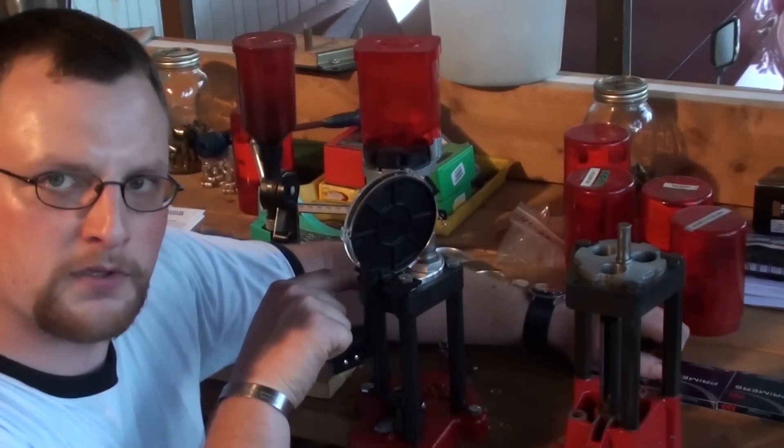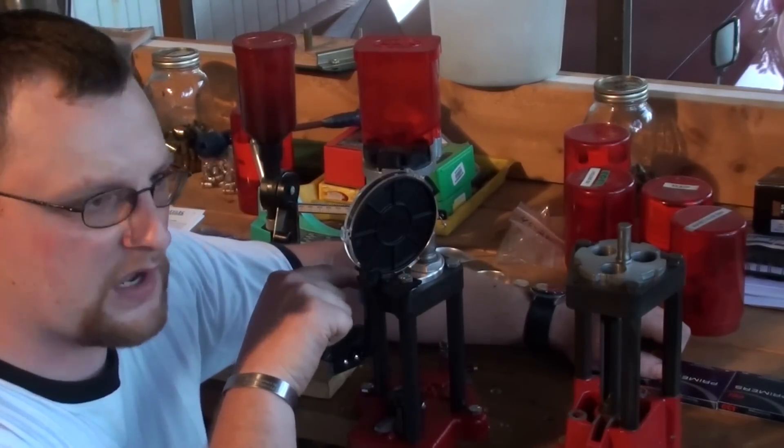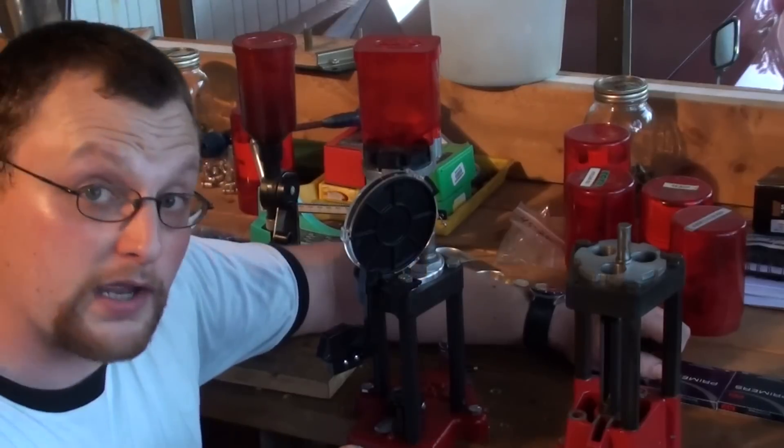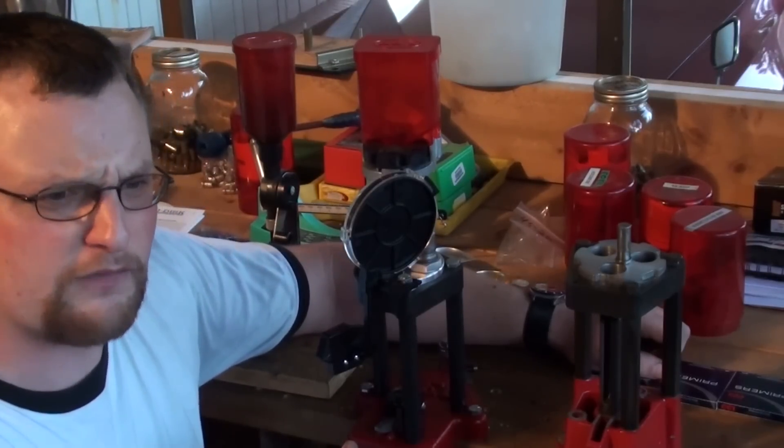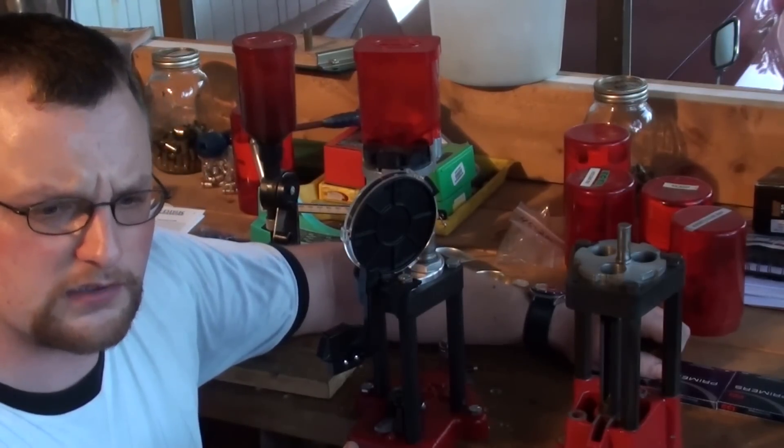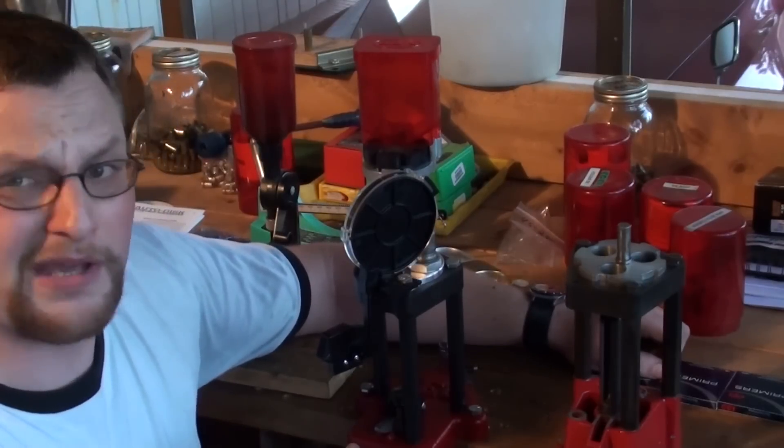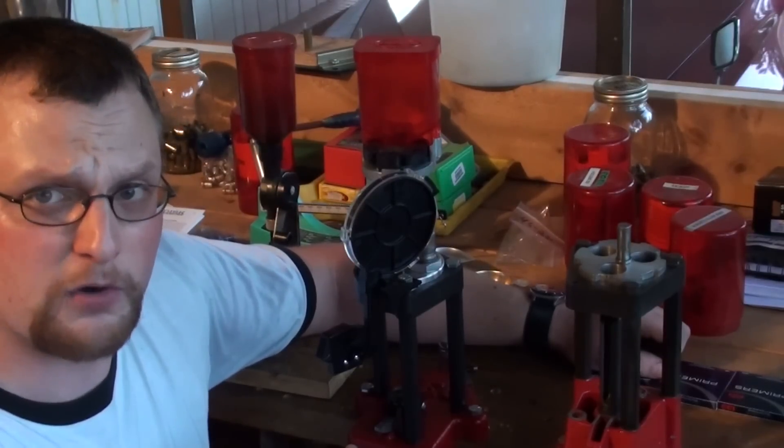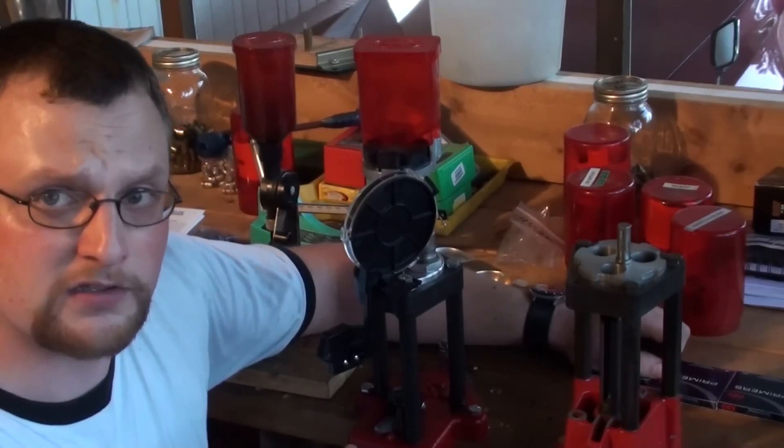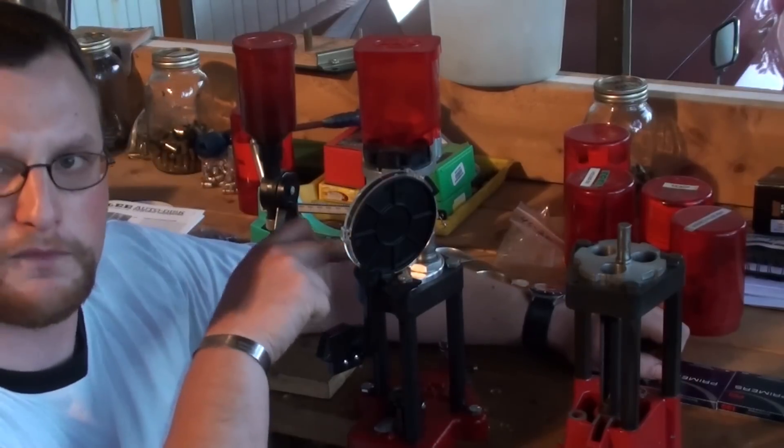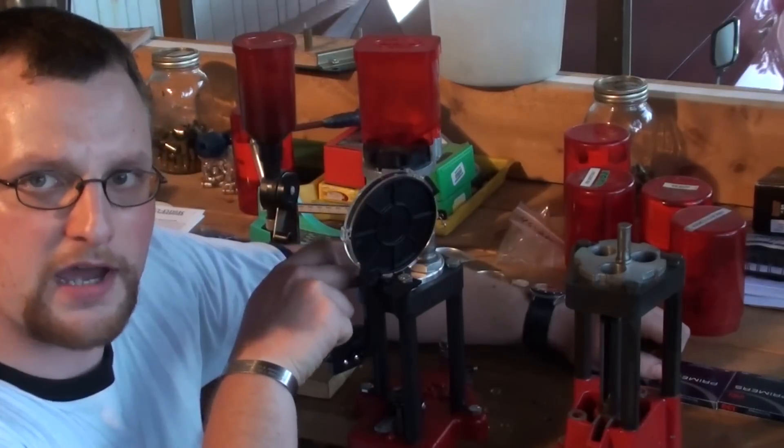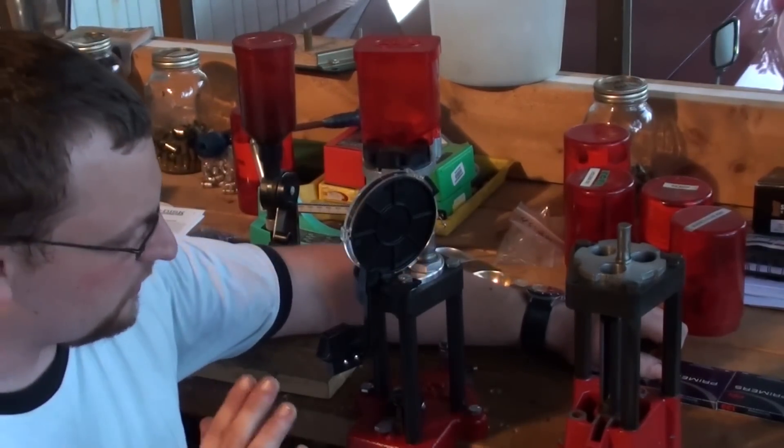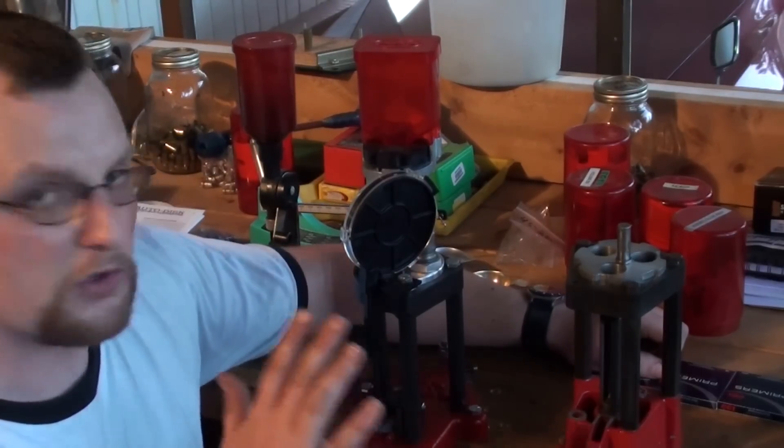Today I'm loading up 9mm. I don't have a 9mm factory crimp die, but so far all the 9mm rounds that I've loaded up with this setup, they run great, both through the Camp 9 and I've run a couple through one of the Kel-Tec P11s. May not run every gun good without using the factory crimp die, so just bear that in mind. There are instructions included with the die that show you how to set it up, and this setup is great for having that feature. So far this is great for loading pistol ammo. Let's get started.